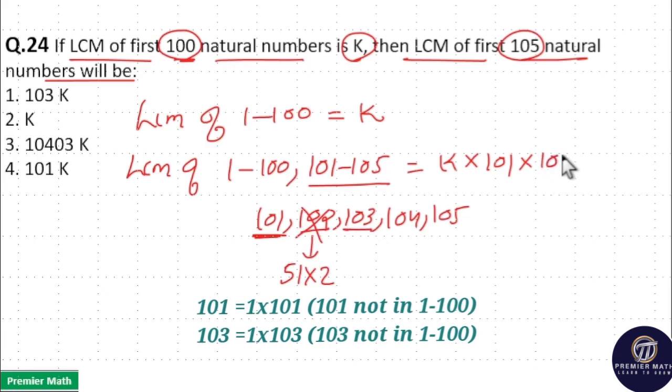So remaining is K times 101 times 103. Now 103 is not divisible by anyone—it's an odd number. Take 104, which is 52 times 2. This 52 and 2 are included in 1 to 100, so leave it.